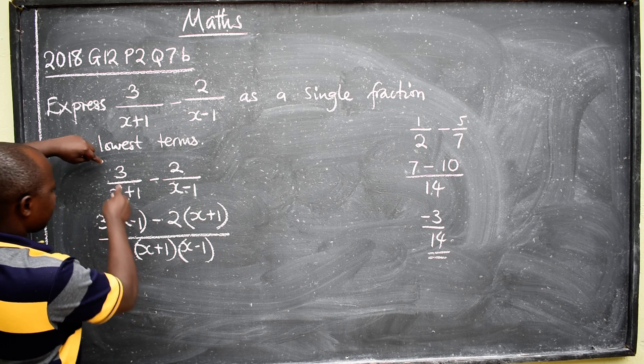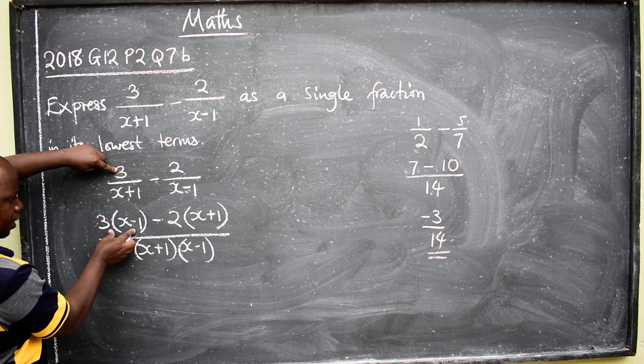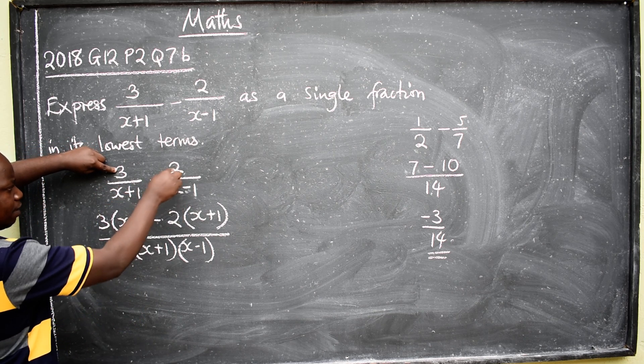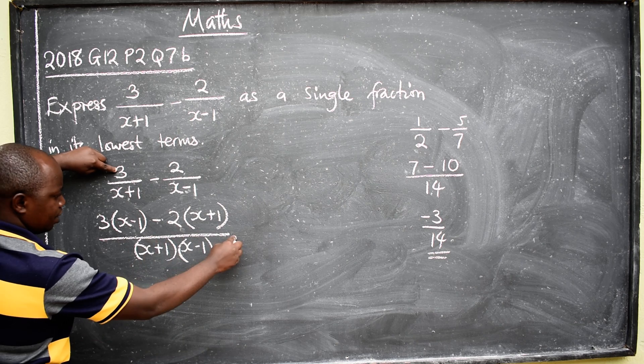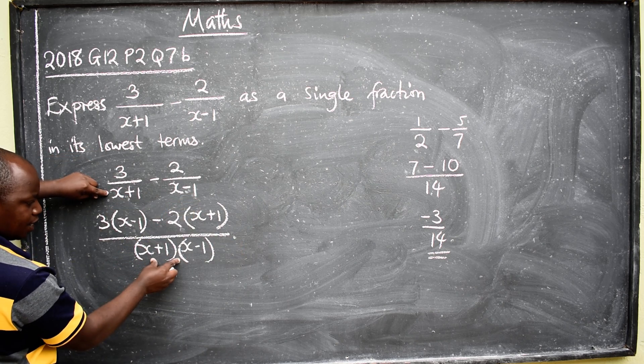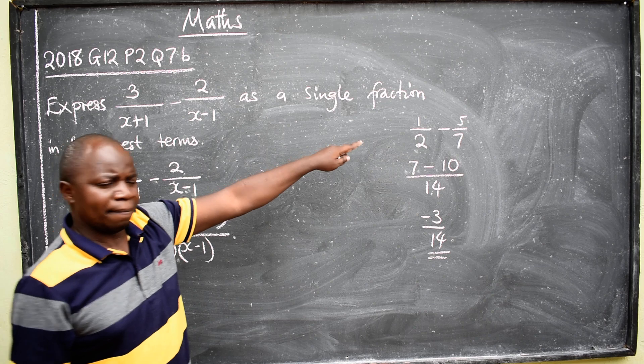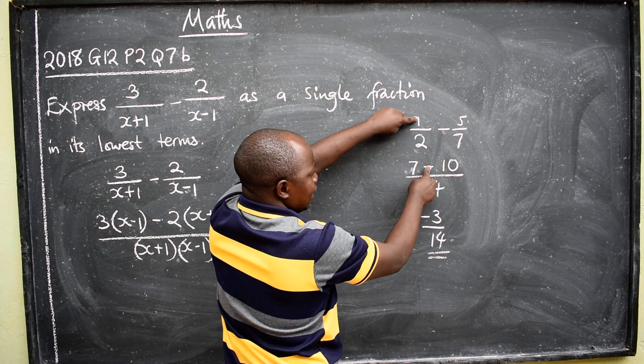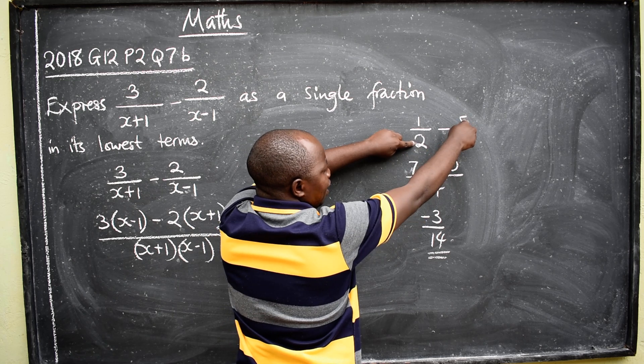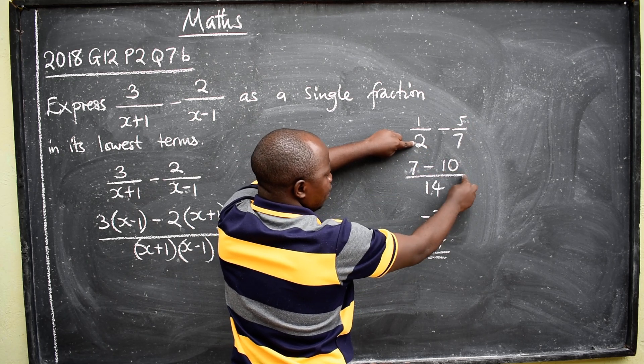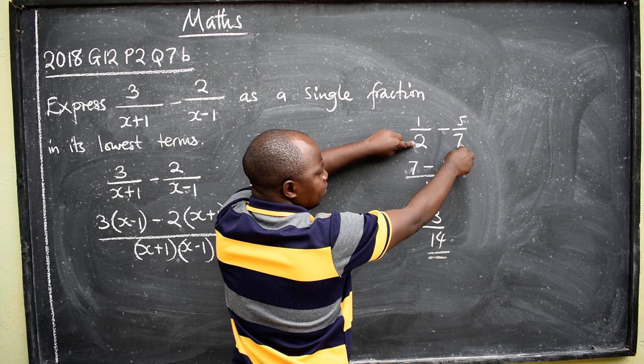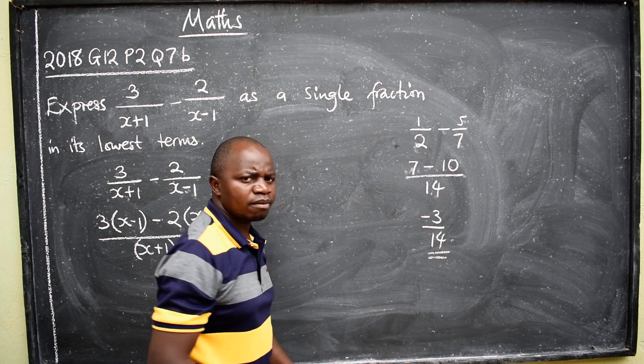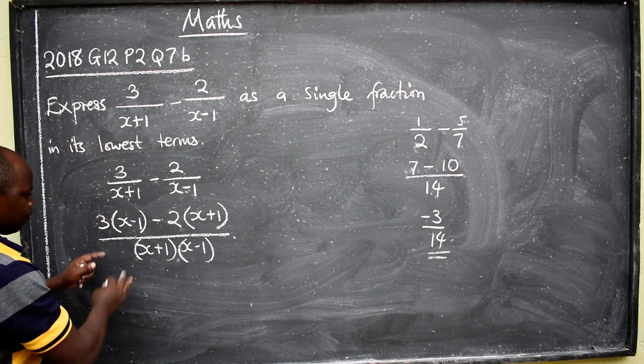Let me repeat myself. This times this, you write here. Minus this times this, you write here. Everything over this times this, you get that. It is the same here. I can say 1 times 7, 7 minus 2 times 5, 10, all over 2 times 7, 14. So, from here now, you just concentrate on the numerator here.